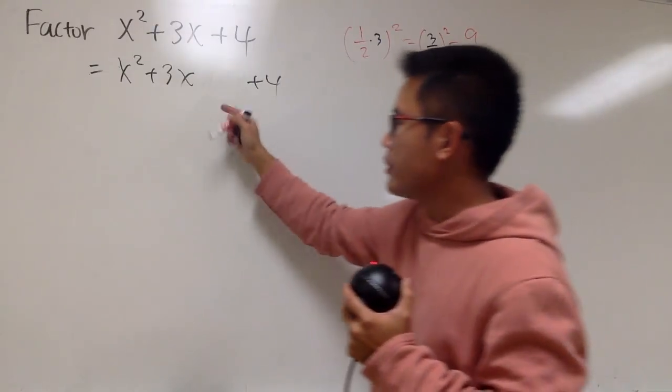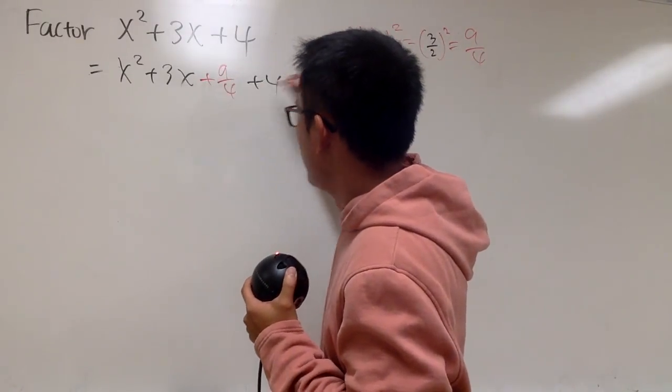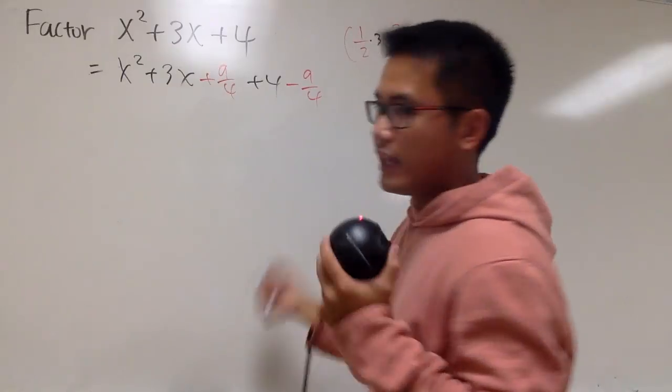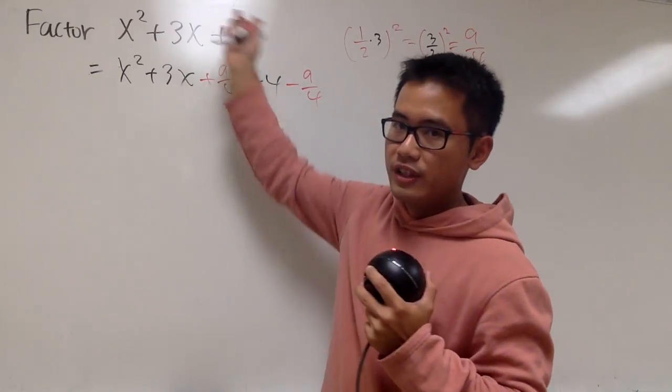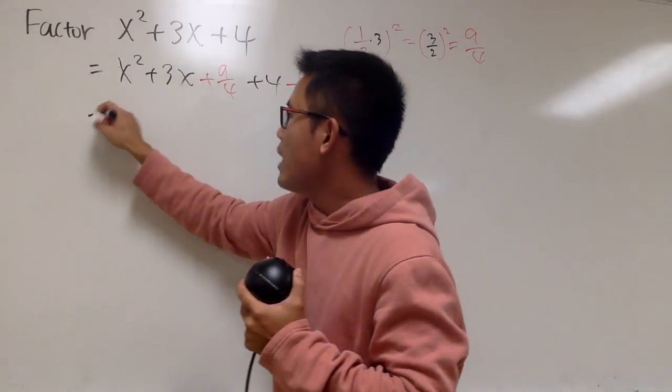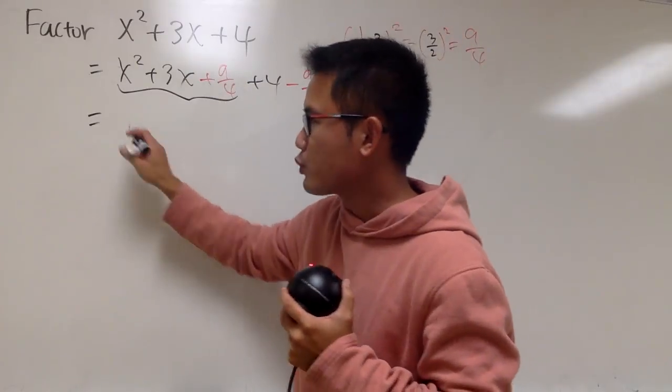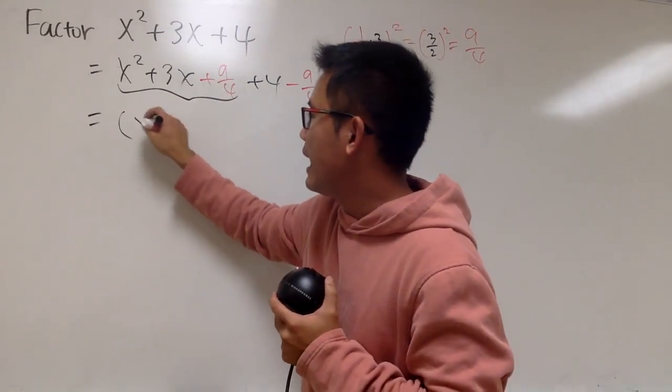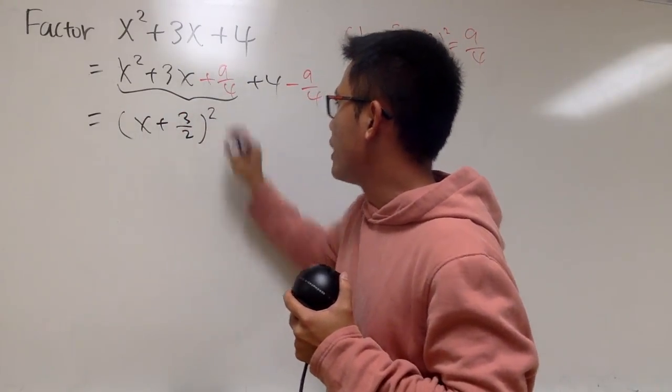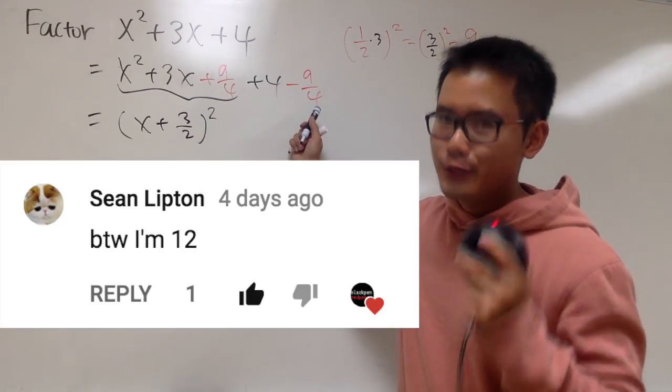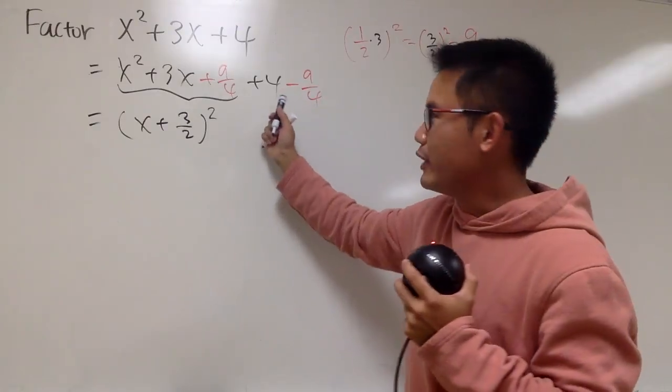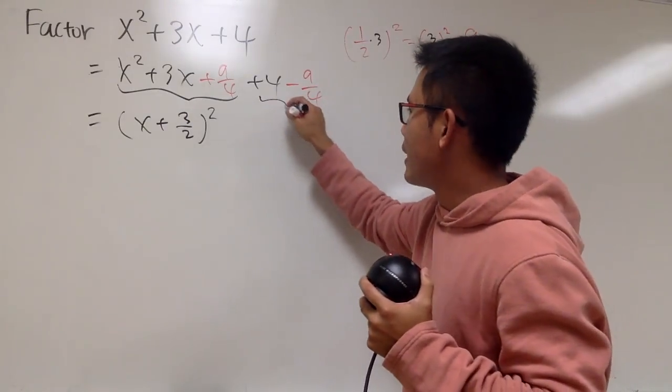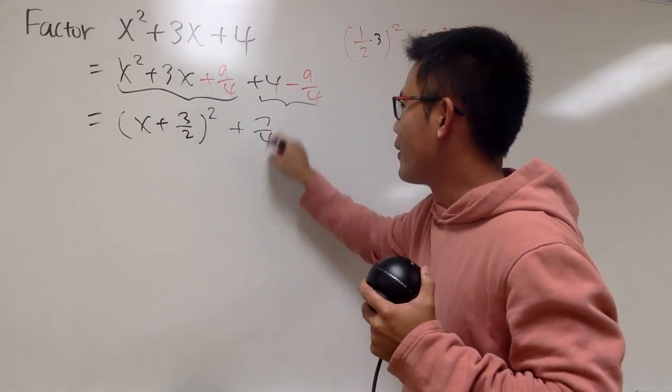And this means I will have to come here and plus 9 over 4, and then right away, don't forget to subtract 9 over 4, so that this expression we didn't change the value for the original. And now the best part is that the first three terms is the perfect square. You can factor this, and you will get x plus 3 over 2 squared. And now, I know you're only 12, but I'm pretty sure you can do this in your head. This right here is just going to be plus 7 over 4.